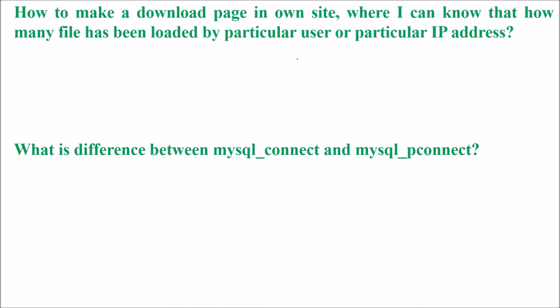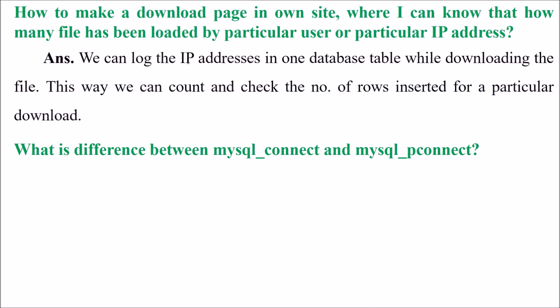How do you make a download page where you can know how many files have been downloaded by a particular user or IP address? We can log the IP address in one database table while downloading the file. This way we can count and check the number of rows inserted for a particular download, and present to the user how many downloads have happened.